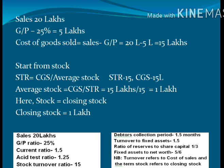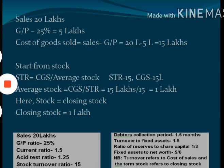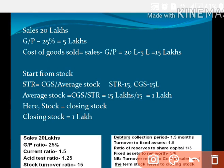Cost of goods sold is equal to sales minus gross profit: 20 lakhs minus 5 lakhs equals 15 lakhs. From this cost of goods sold we can reach stock by using the stock turnover ratio. Stock turnover ratio equals cost of goods sold divided by average stock. Here cost of goods sold is 15 lakhs, and stock turnover ratio is given in the question as 15. So average stock equals 15 lakhs divided by 15, which equals 1 lakh.